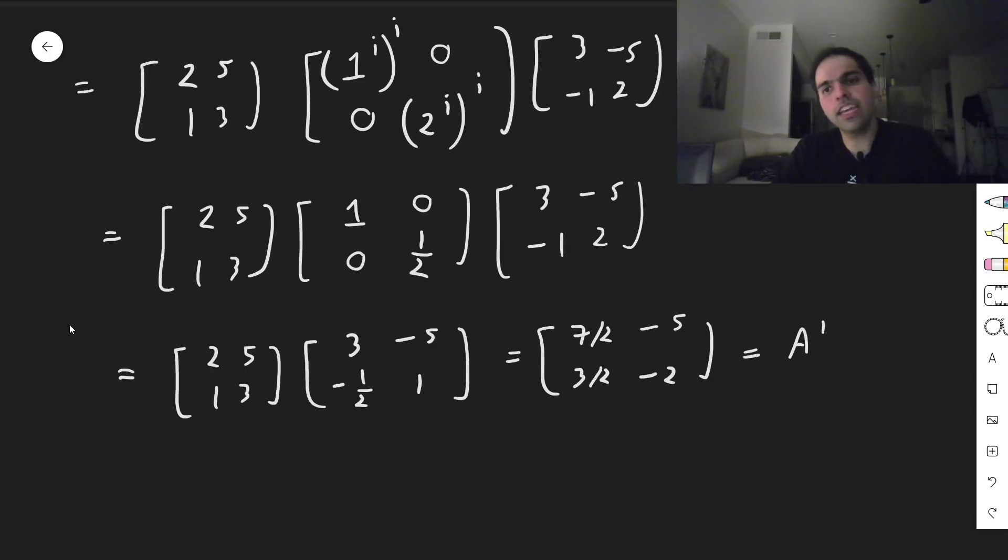And that is, again, A to the i to the i. On the other hand, let's calculate A inverse. Why not? So A inverse of this matrix, so minus 4, 10, minus 3, 7, inverse.